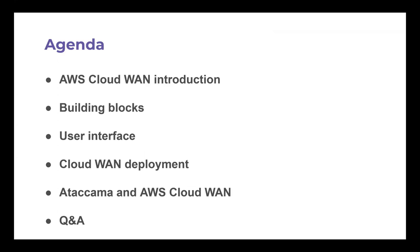Then we'll talk about the building blocks — how you can actually build your own Cloud WAN, what you need, and how it's priced. Then I'll show you the user interface, which is basically one of the few AWS UIs that's actually good. You can debug a lot of things, you have amazing information, and you can really operate the whole thing from there. Then I'll show you the basics: how to deploy your first Cloud WAN, how to operate, edit, and modify it. And as a last thing, I'll describe how Atacama got into Cloud WAN, what the challenges were, and how they were solved.